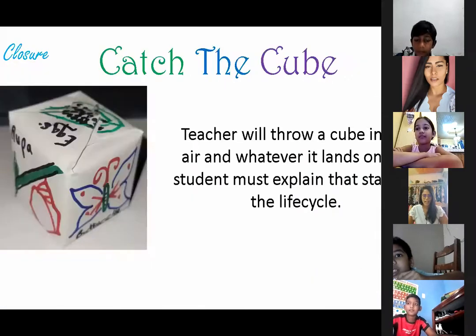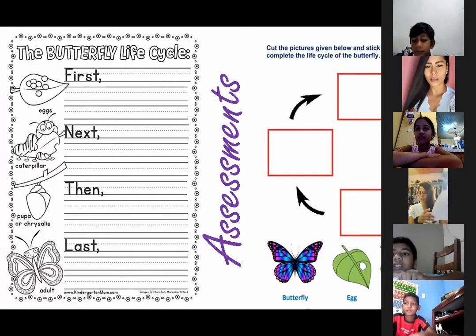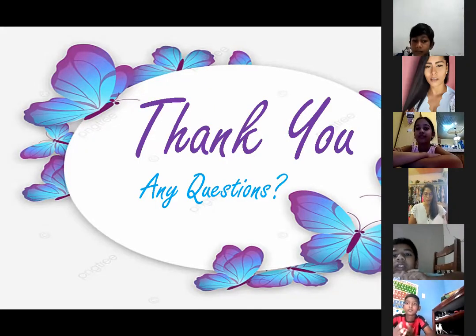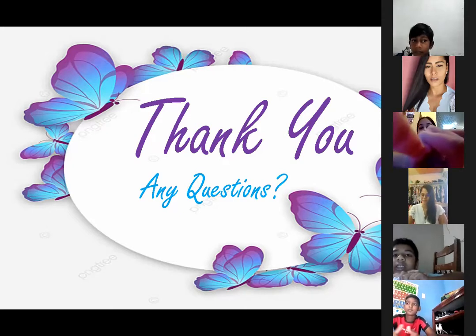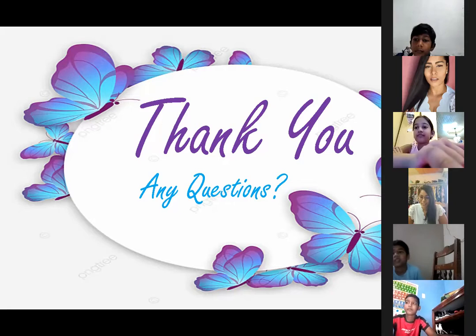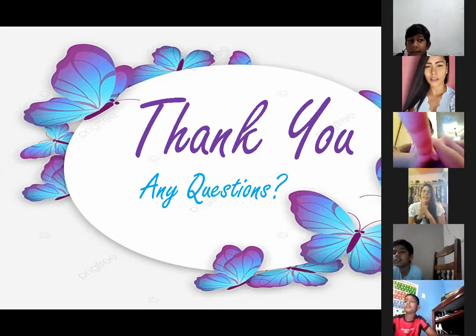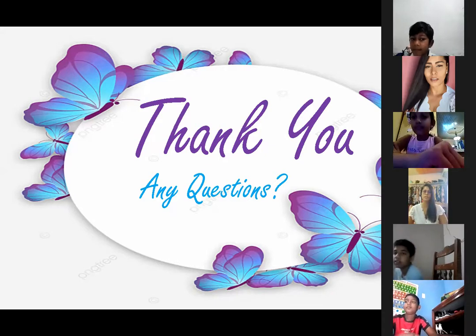That is it for today. I have an assessment for you — you will stick it in your books and I will correct them later. Thank you very much everyone. Do you have any questions? Aaron: do any species of butterflies lay eggs in the same way? Yes, they do. Every species of butterfly has the same exact life cycle — they lay eggs, hatch into caterpillars, form the pupa, and become a beautiful butterfly.